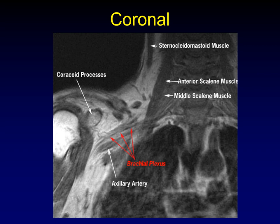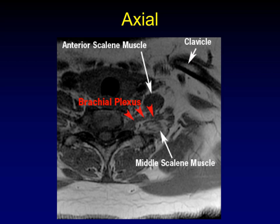Here's the same anatomy in the coronal plane: sternocleidomastoid muscle, anterior and middle scalene muscles, and the brachial plexus coming through the scalene triangle, right above the axillary artery. You can definitely make out the brachial plexus in the coronal plane — it looks like strings of spaghetti flowing through the thoracic outlet. In the axial plane as well, right behind the anterior scalene muscle, you see stringy spaghetti-like elements of the brachial plexus, though the sagittal plane cutting them in cross-section is the preferred approach.